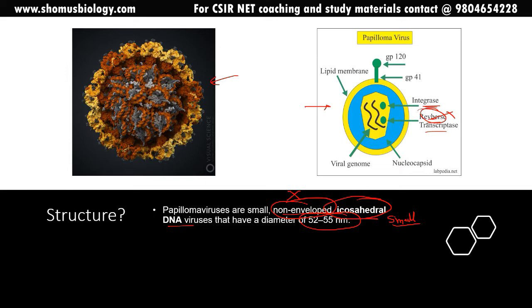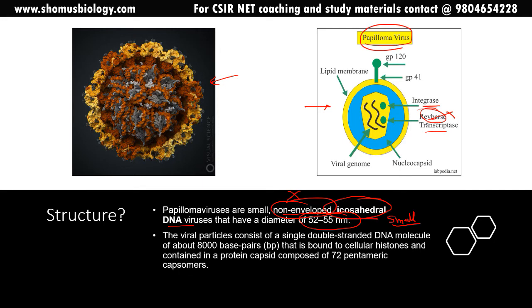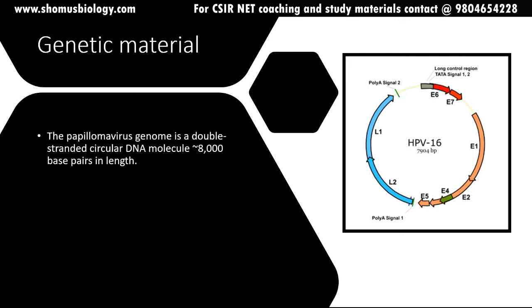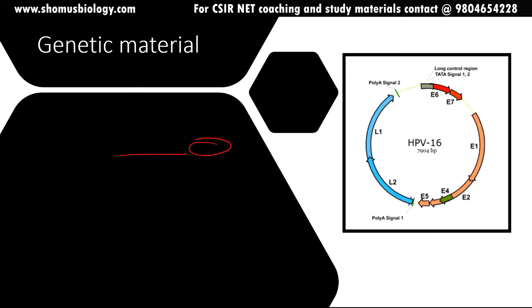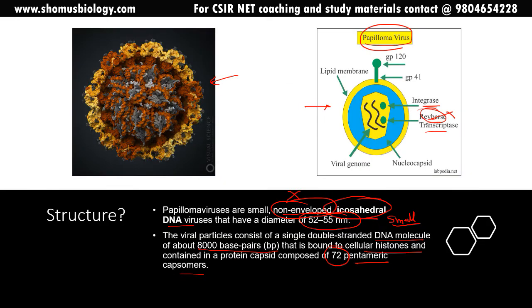There are multiple strains and multiple types of papilloma virus. The virus particle consists of a single double-stranded DNA molecule of about 8,000 base pairs, which is bound to cellular histones and connected to a protein capsid made up of 72 pentameric capsomeres. The papilloma virus genome is a single circular DNA of 8,000 bases in length — there is no fragmentation.